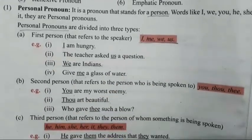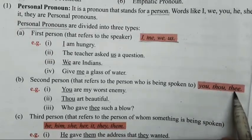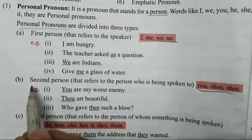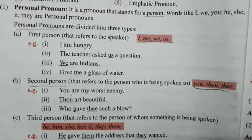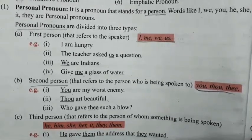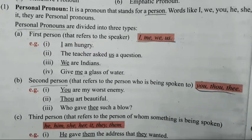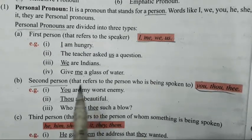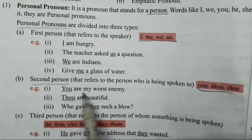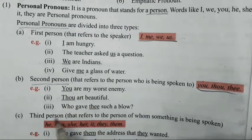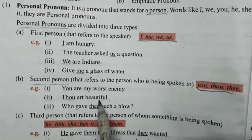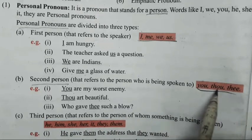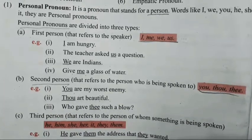Second type is second person — that is: you, do, thee. Remember these words as second person. Exam mein aapko fill in the blanks mein yeh pata hona chahiye ki kahan pe konsa word use karna hai. Examples: 'You are my worst enemy.' 'Do art beautiful.' 'Who gave thee such a blow?' So only these words are to be remembered as second person.